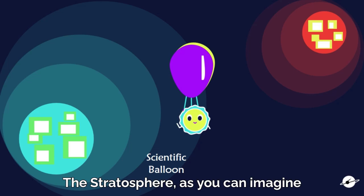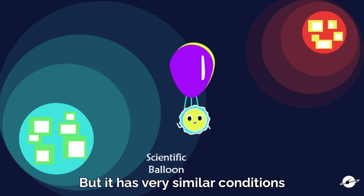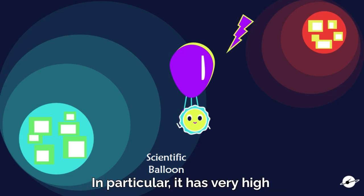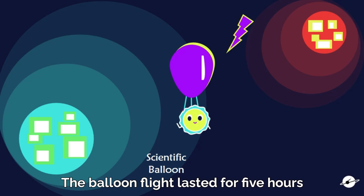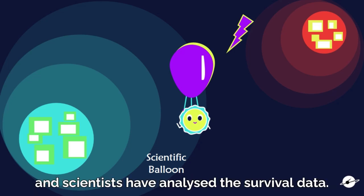Stratosphere, as you can imagine, is not Mars. But it has very similar conditions to those that you can find on the surface of Mars. In particular, it has very high levels of radiation. The balloon flight lasted for 5 hours and then the spore was brought back to Earth and scientists have analyzed their survival data.